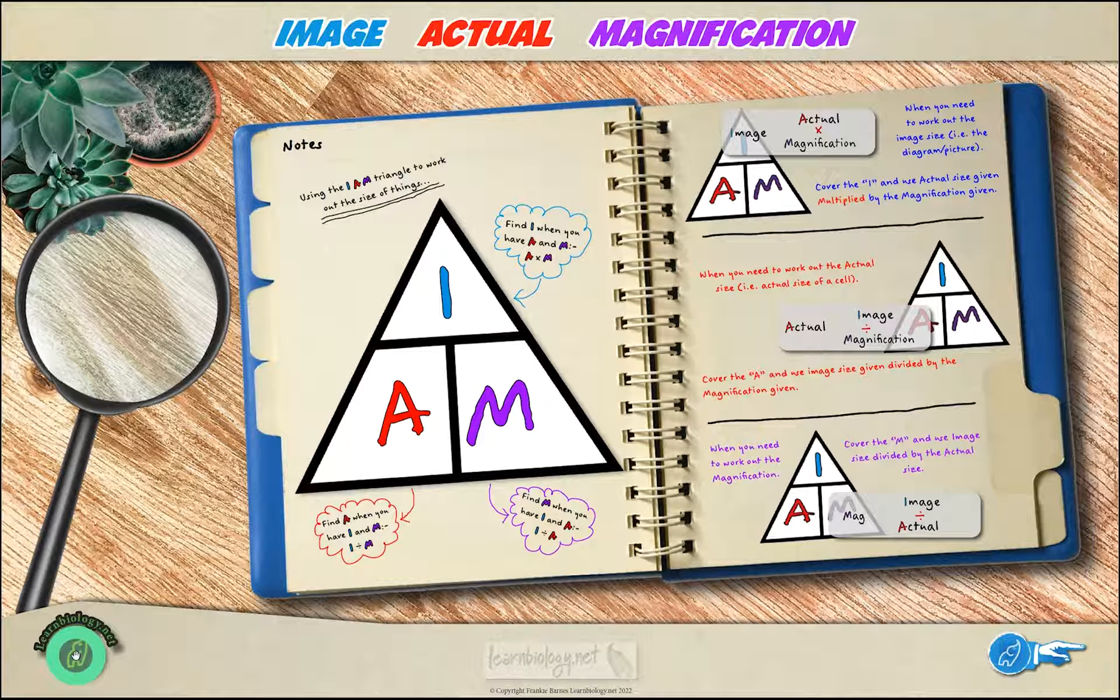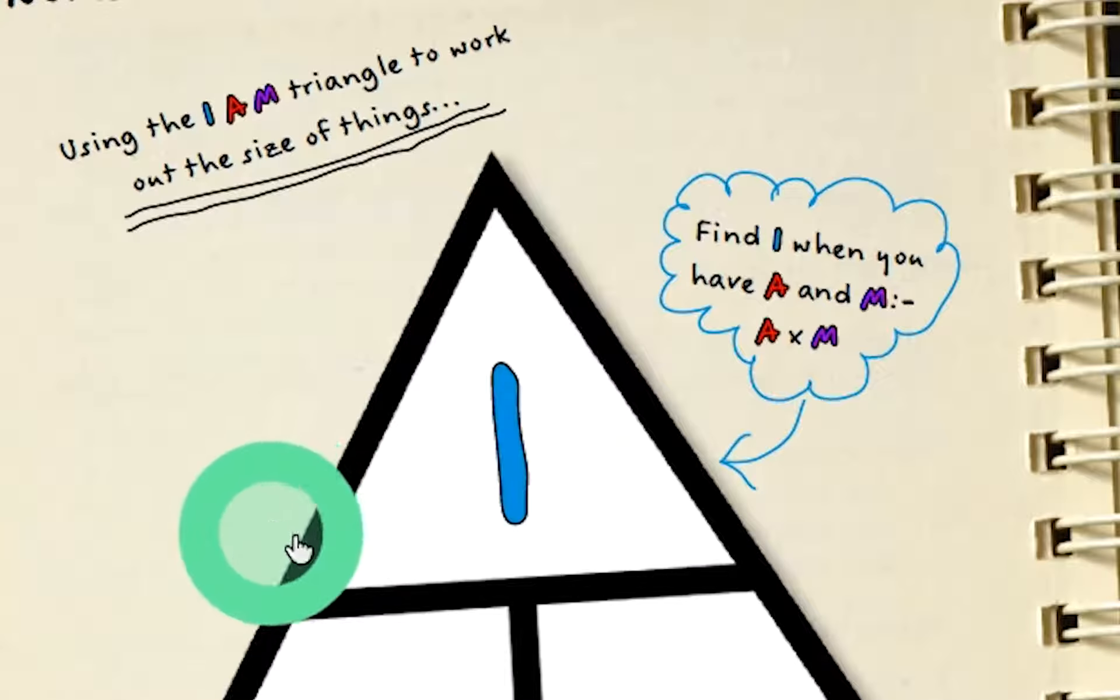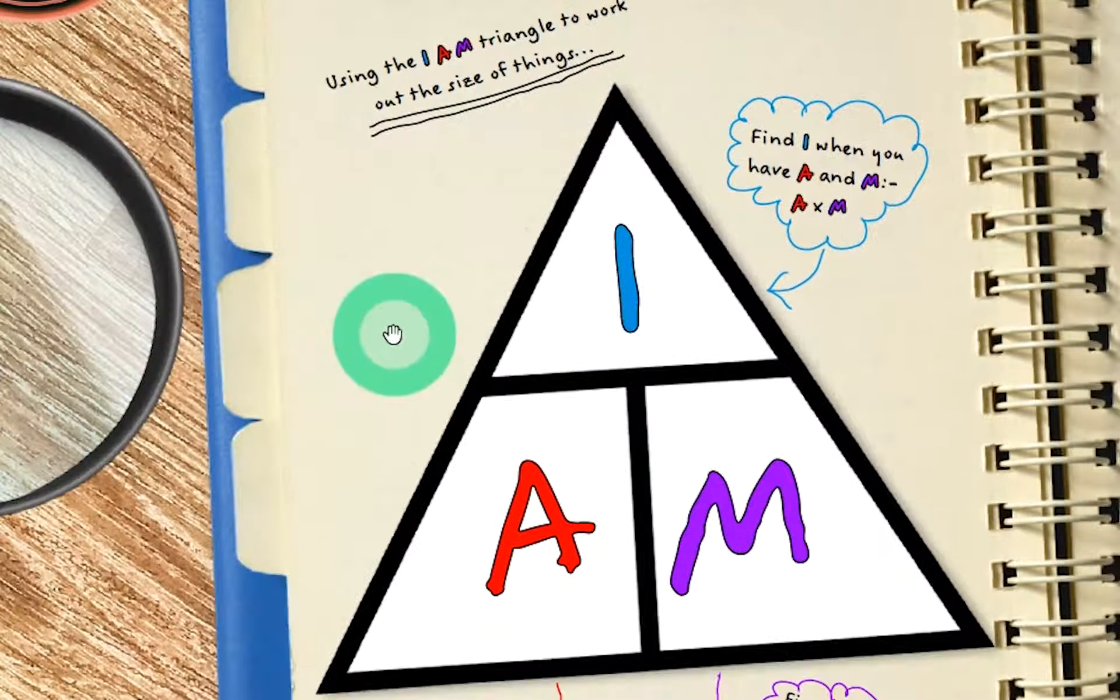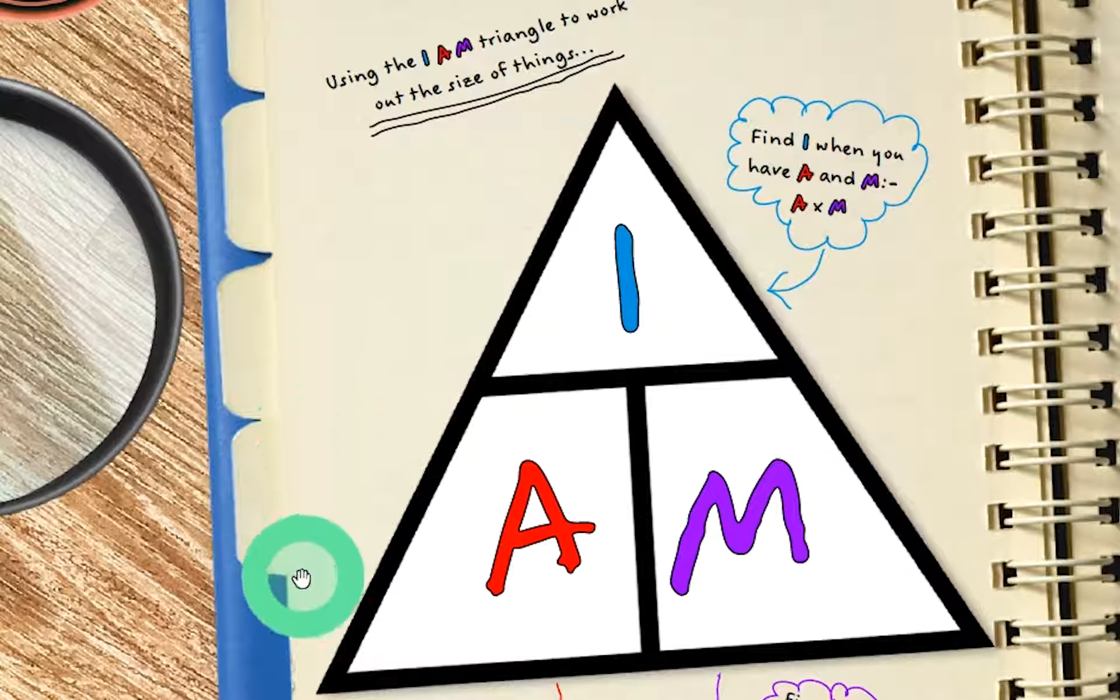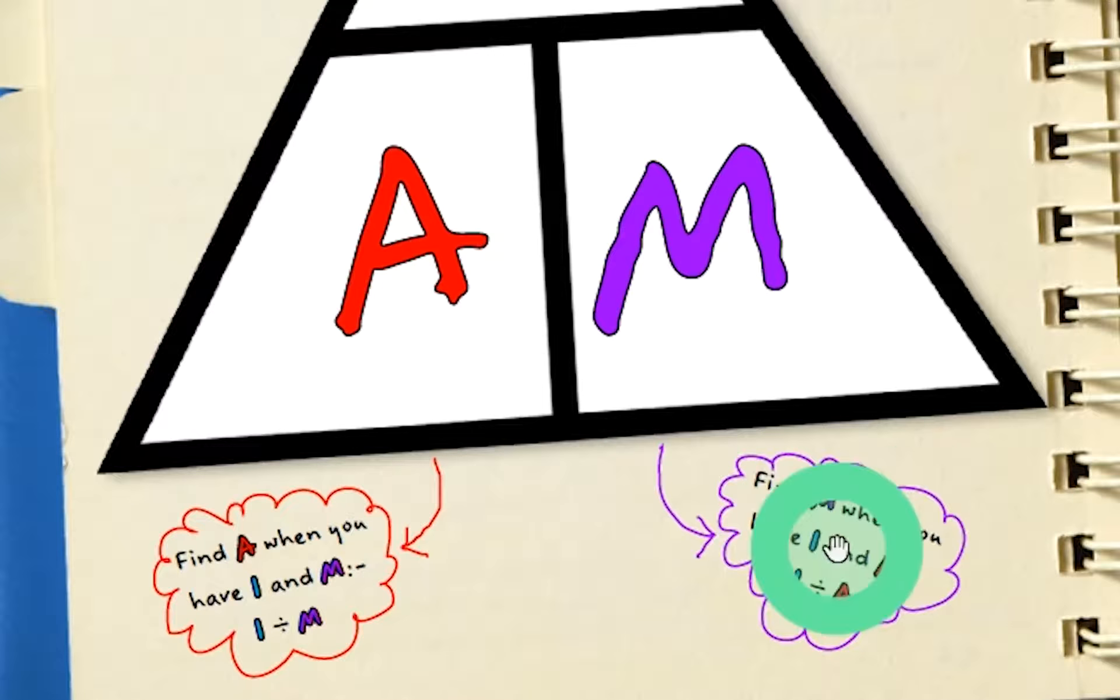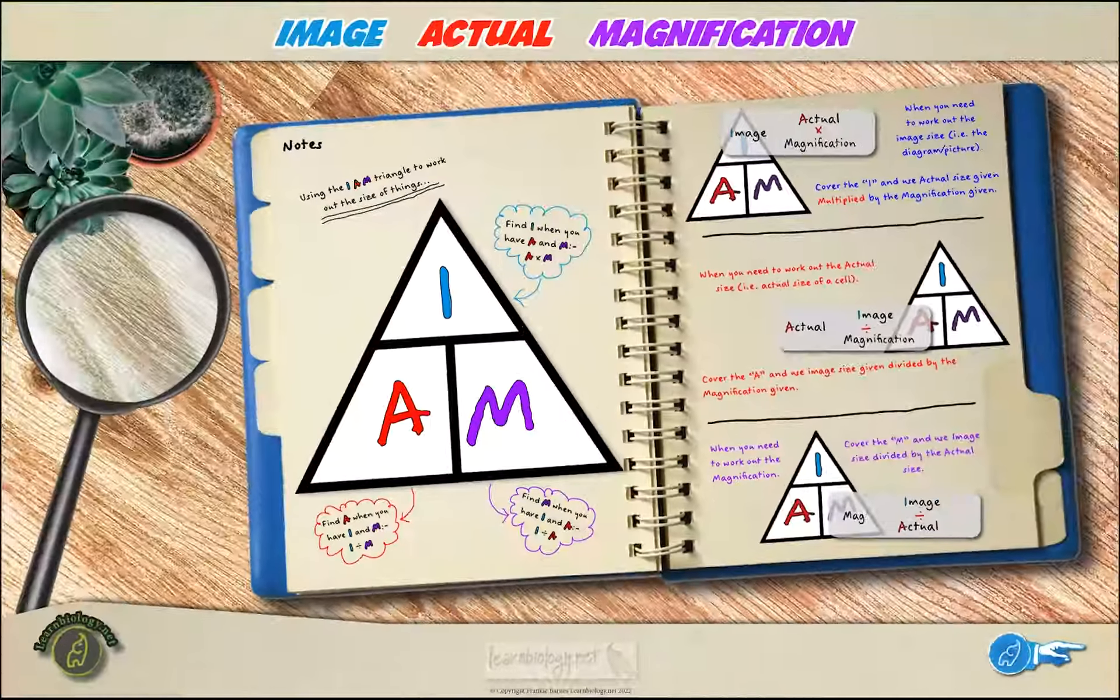This triangle is going to be really useful when it comes to your exams and being able to work things out, the size of stuff. So the I at the top represents the image. Now this could be a photograph, a diagram, a sketch, whatever. It's not real, it's just an image. Whilst the A represents the actual thing. So the real size of whatever it is that you're looking at. The M represents magnification. So you'll use this I am triangle when you're expected to work out the size of something.